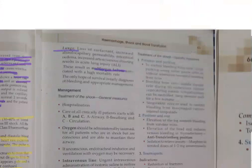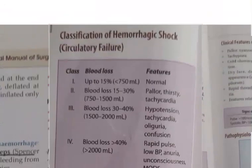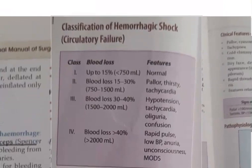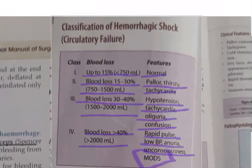In summary: Class 1 — less than 15% blood loss (<750 ml), normal parameters. Class 2 — 15 to 30% blood loss (750–1500 ml), pallor, thirst, and tachycardia. Class 3 — 30 to 40% blood loss, hypotension, tachycardia, oliguria, and confusion. Class 4 — greater than 40% blood loss (>2000 ml), rapid pulse, very low BP, anuria, unconsciousness, and multi-organ dysfunction syndrome.